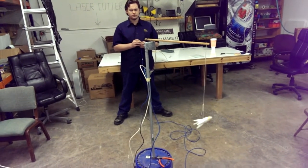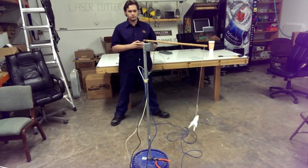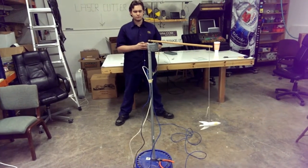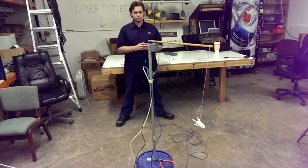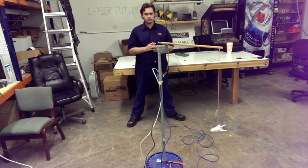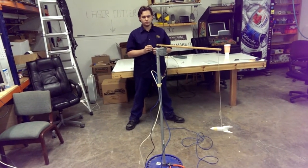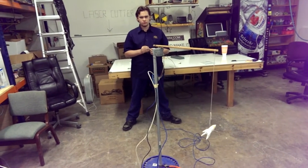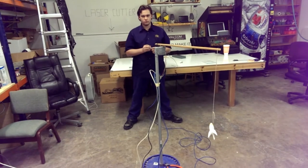Alright, so James and I hacked together this rocket stability test rig in maybe an hour or two. What it does is it spins the rocket so we can make sure that at low speeds when it's coming off the launch rod, it's going to be stable enough.